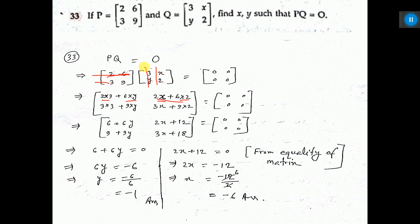Now second row, first column. That is 3 into 3, 9 into Y, and in between plus. Then second row, second column: 3 into X, 9 into 2. So this is the technique of matrix multiplication.